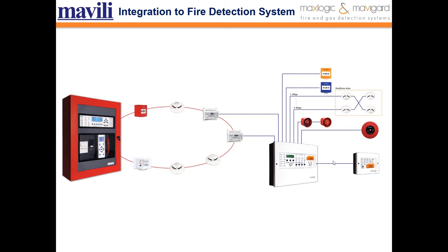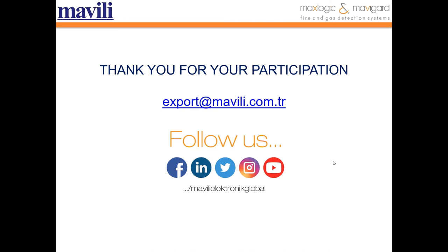Let's talk about integration with the fire detection system. If a gas extinguishing system is installed in a building that already has a detection and warning system, the alarm and fault outputs of the extinguishing system are connected to the fire alarm system and monitored with separate zone indicators. It is connected to fire detection systems with fire and fault relays on the extinguishing system and can be monitored as a separate zone.